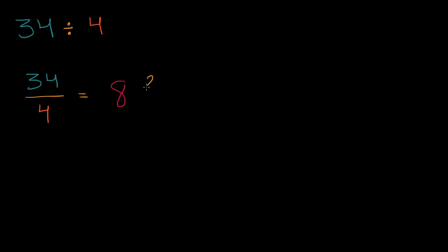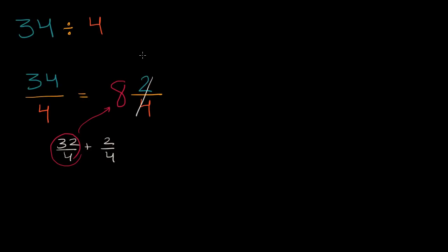We could rewrite this as 32 over four plus two over four. The 32 over four is our eight. So eight and two fourths. Two fourths is the same thing as one half. If we want to express that in terms of tenths, this is equal to eight and — one half is the same thing as five tenths — eight and five tenths, which, if we want to express it as a decimal, is eight point five. And we are done.